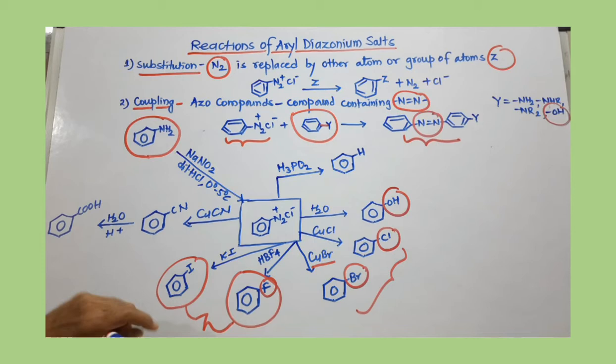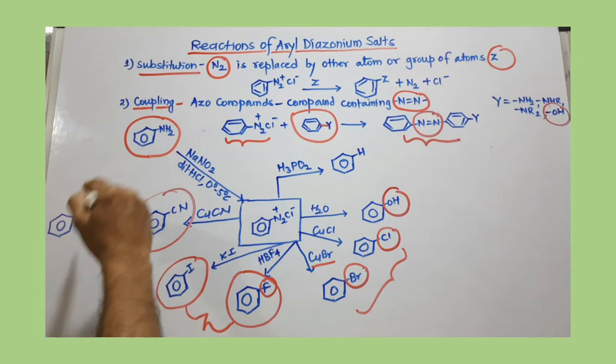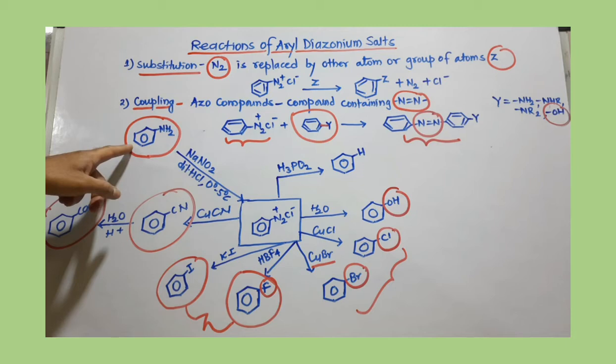In the presence of CuCN, a CN group is introduced and benzonitrile is produced. After hydrolysis, the cyanide group is converted to a COOH group, generating benzoic acid. In this way, different functional groups can be introduced, all originating from aniline as the starting compound.